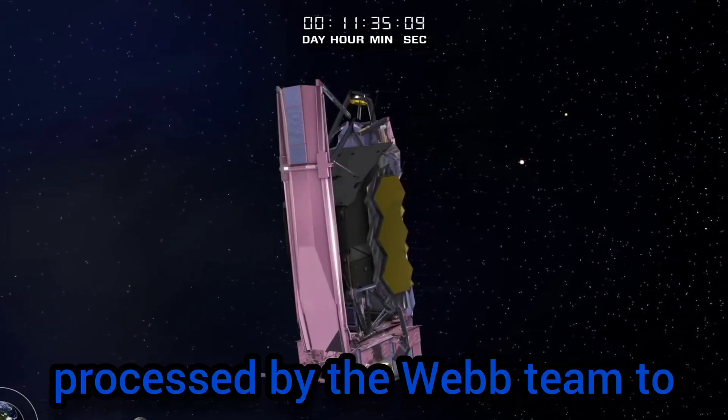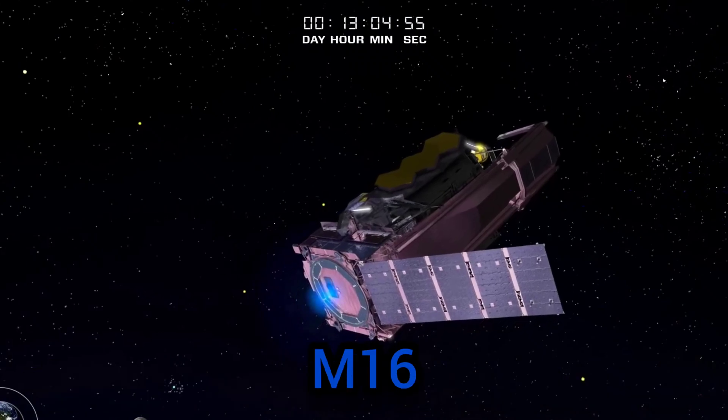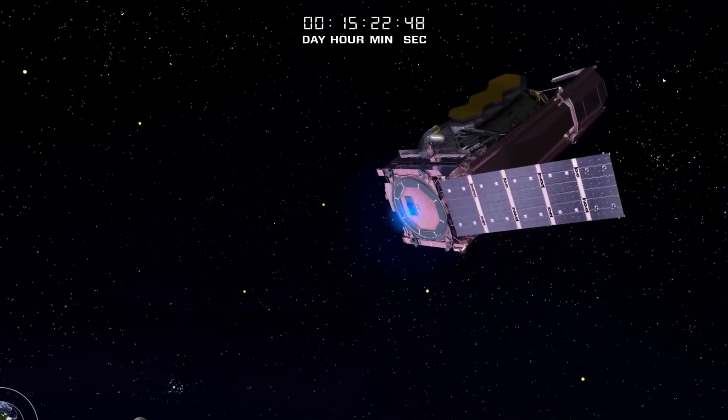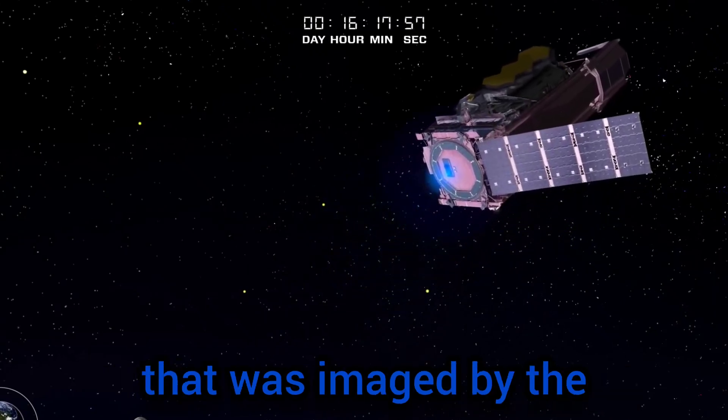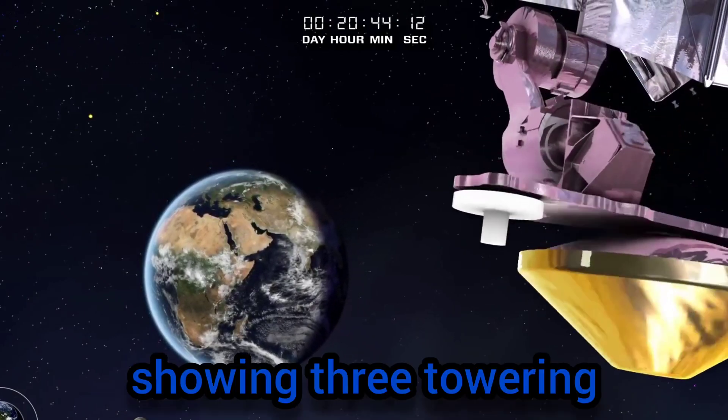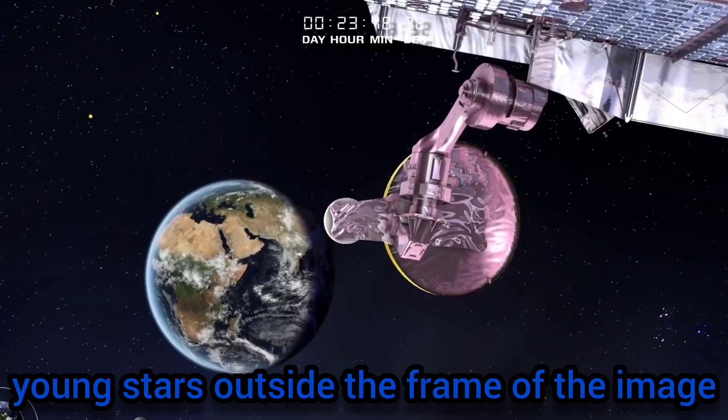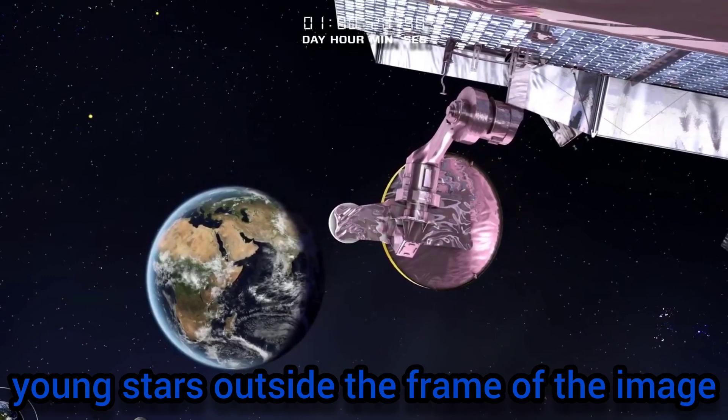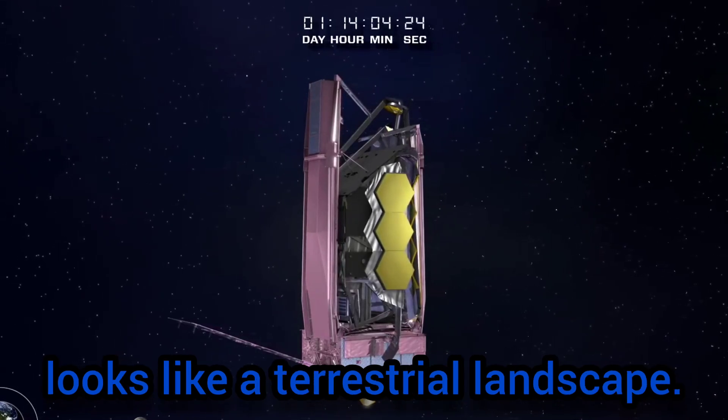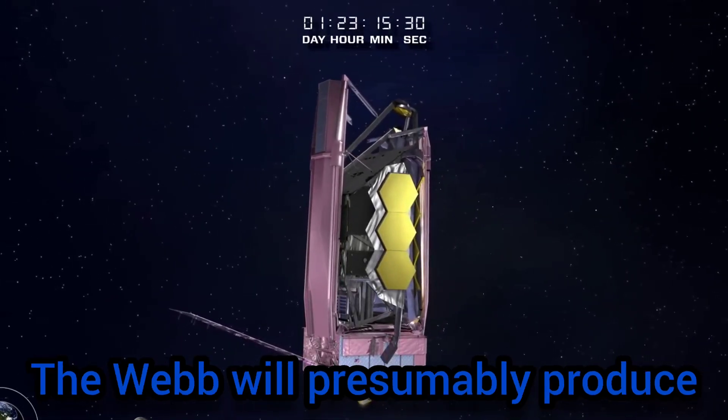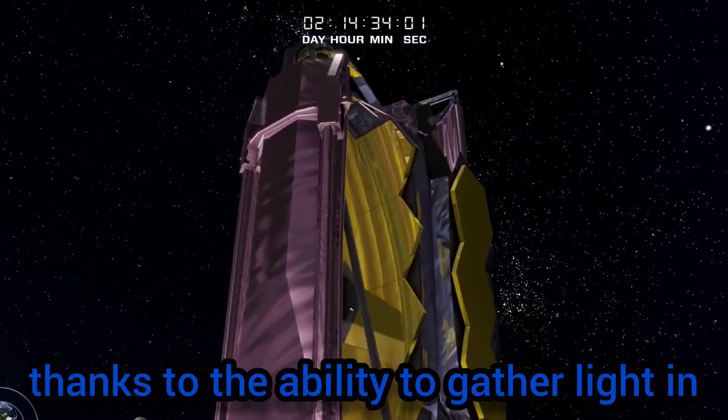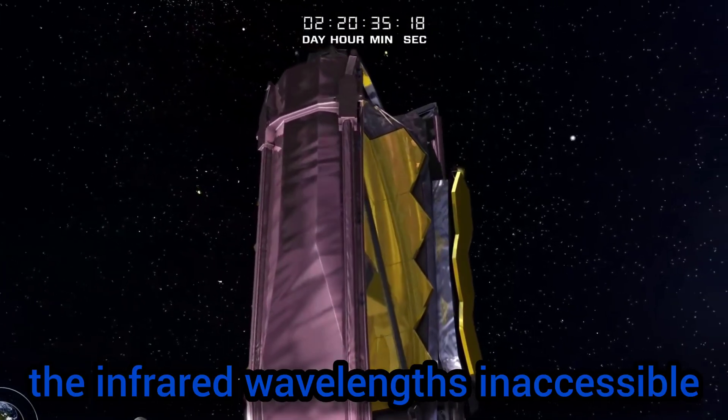M16, the Eagle Nebula. This is famously the home of a structure nicknamed the Pillars of Creation that was imaged by the Hubble Space Telescope. It became one of the most famous Hubble images, showing three towering pillars of dust illuminated by hot young stars. The Webb will presumably produce a similarly framed image but with new resolution and details thanks to its ability to gather light in the infrared wavelengths inaccessible to Hubble.